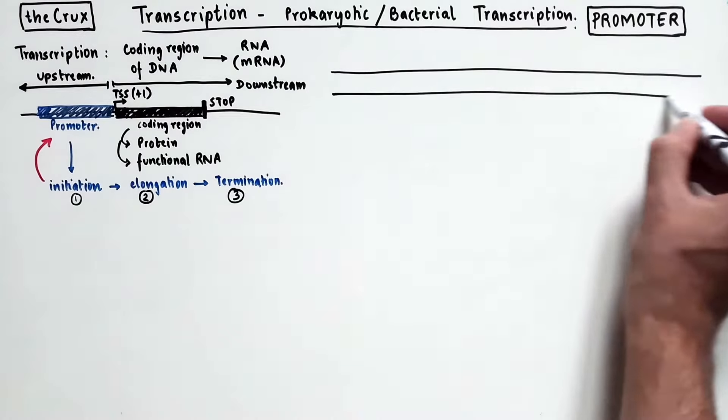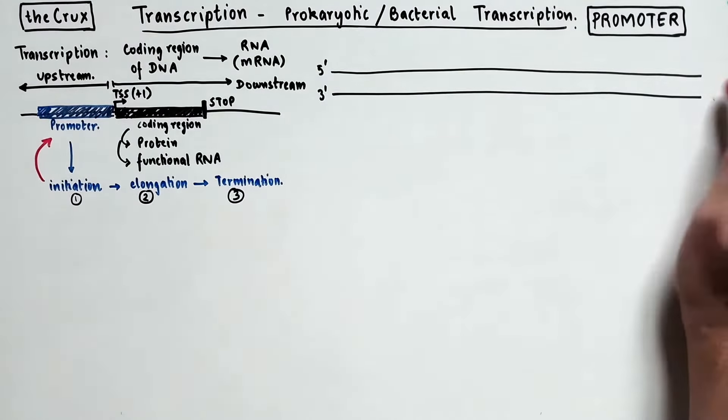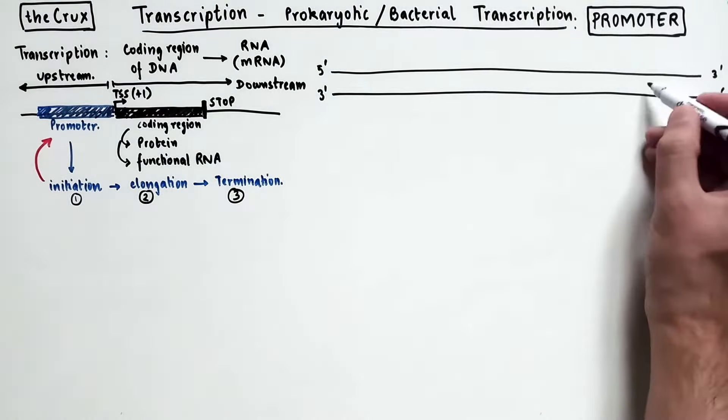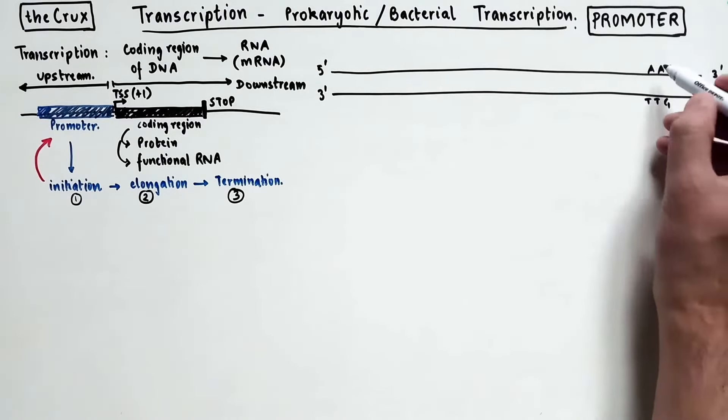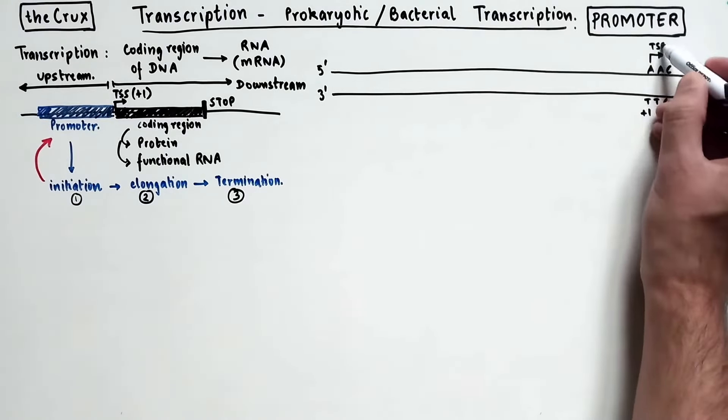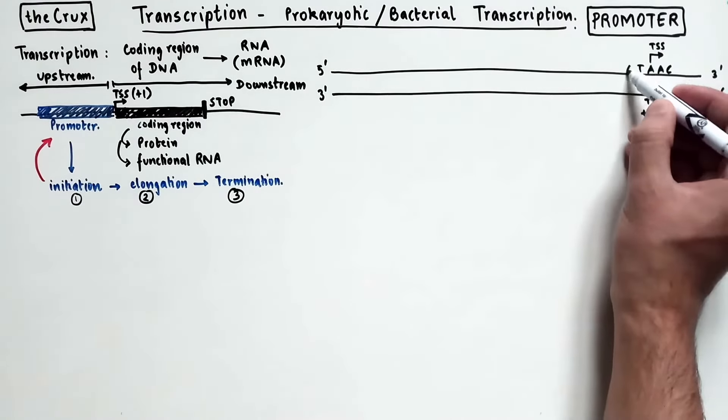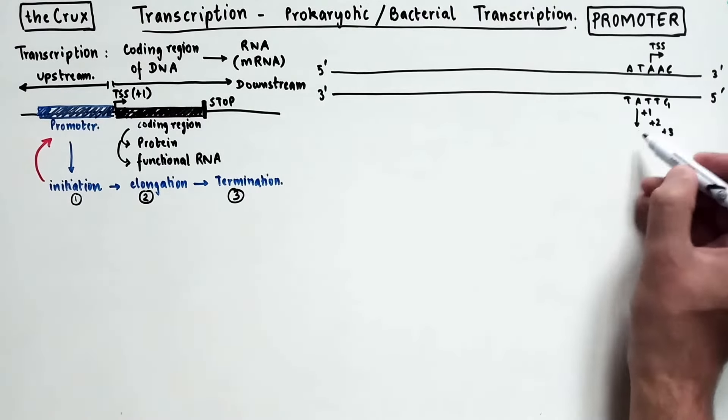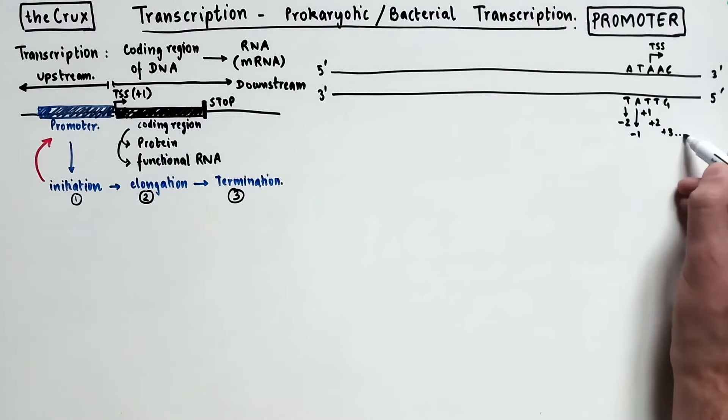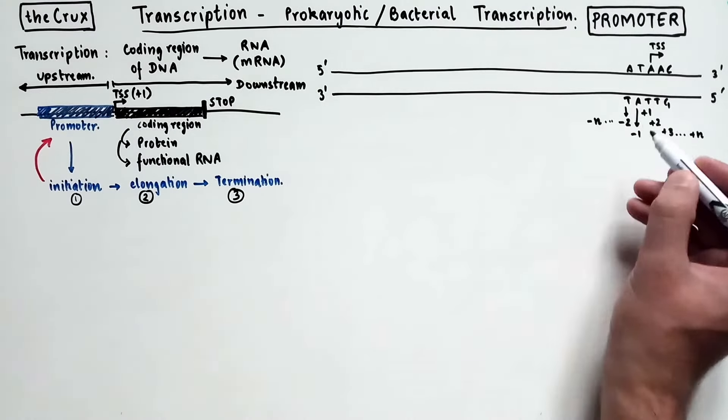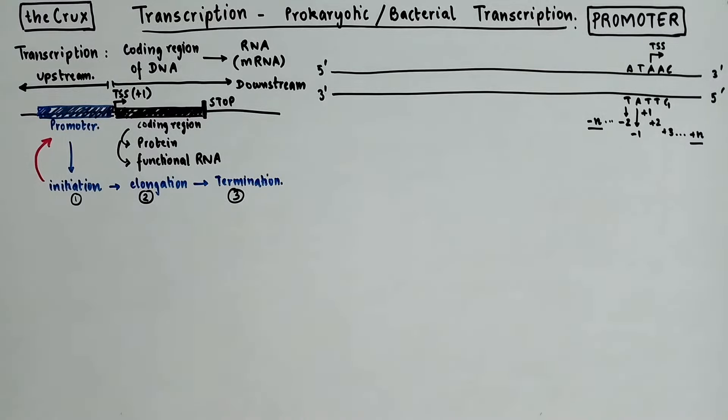So, consider this double-stranded DNA, and let's mark our reference at TSS, which is the first base of the coding region. And then downstream of the plus one site, you have the plus two, plus three. And on the upstream site, you have negative one and negative two sites. And you can continue writing this notation for all bases in both directions. And you should note that there is no site zero.